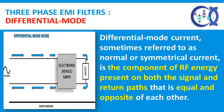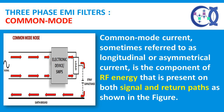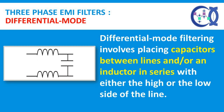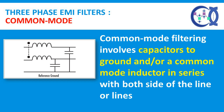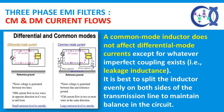Differential and Common Mode Filtering: Differential mode current, sometimes referred to as normal or symmetrical current, is the component of RF energy present on both the signal and return paths that is equal and opposite of each other. Common mode current, sometimes referred to as longitudinal or asymmetrical current, is the component of RF energy that is present on both signal and return paths, as shown in the figure. Differential mode filtering involves placing capacitors between lines and/or an inductor in series with either the high or the low side of the line. Common mode filtering involves capacitors to ground and/or a common mode inductor in series with both sides of the line. A common mode inductor does not affect differential mode currents except for whatever imperfect coupling exists — that is, leakage inductance. It is best to split the inductor evenly on both sides of the transmission line to maintain balance in the circuit.